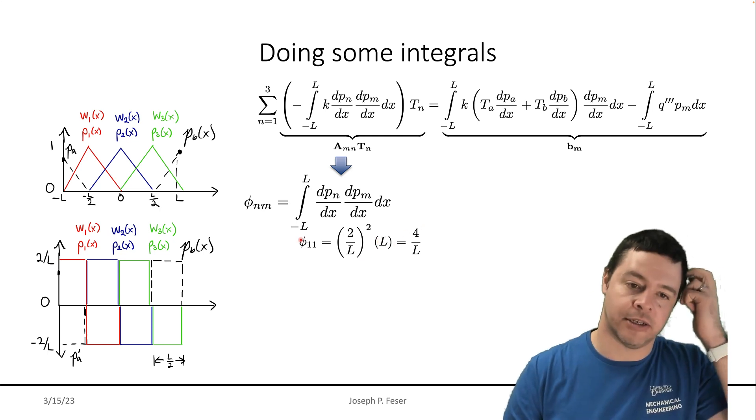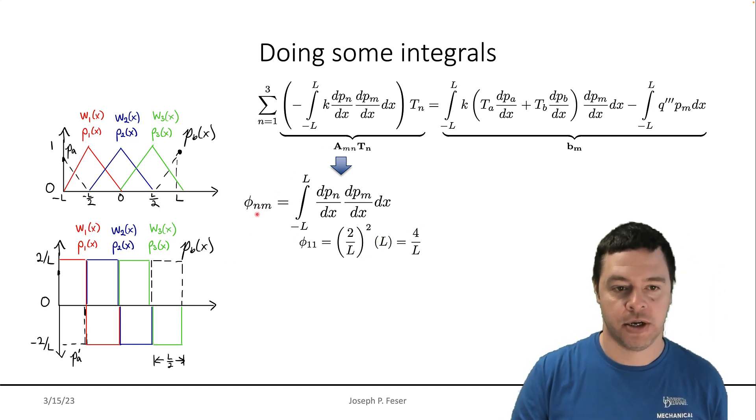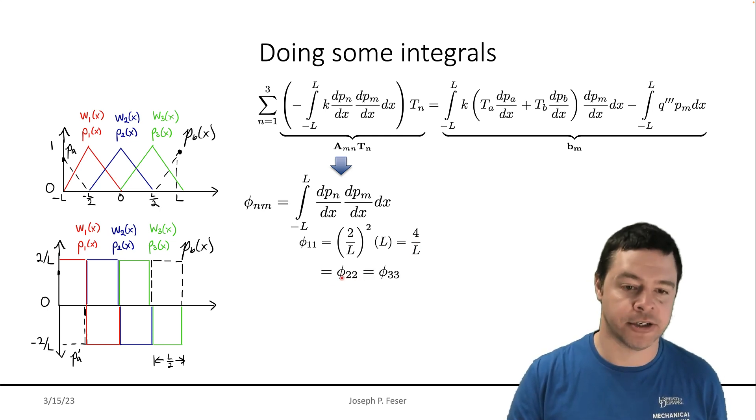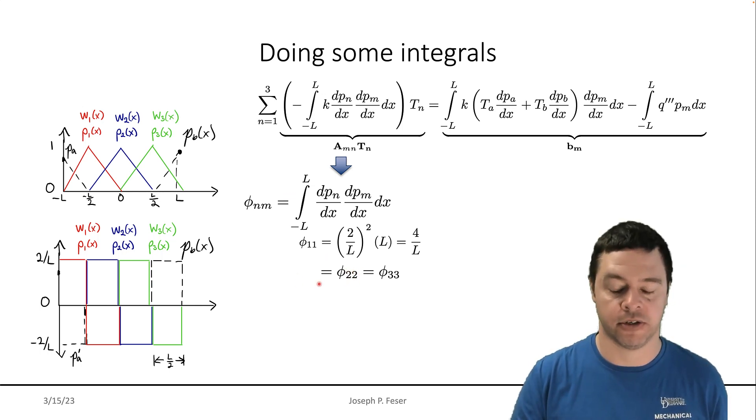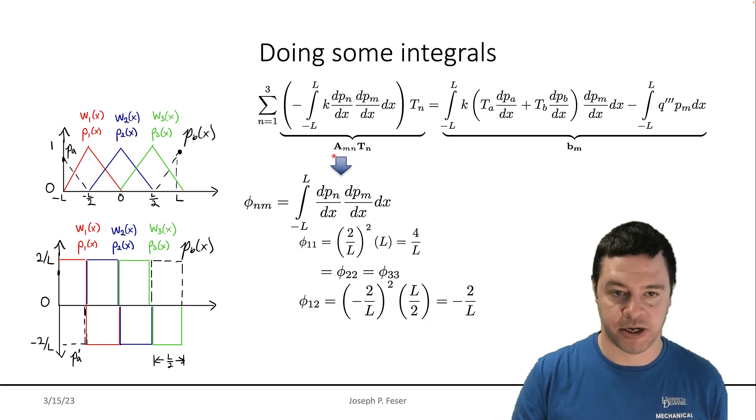And you can work that out to see that the coefficient associated with N equals one, M equals one, turns out to be four over L. And that turns out to be true for any of the ones where M is equal to N, because basically all these tent functions look the same. So those are the diagonals of this matrix.